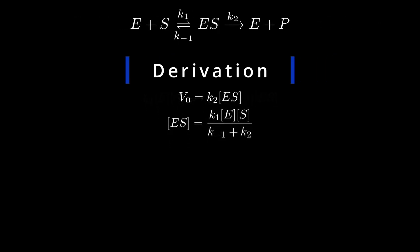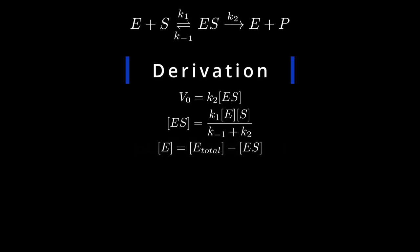However, we encounter another problem. Similar to ES concentration, the concentration of free enzymes cannot be easily obtained from experimental observations. On the other hand, the total concentration of the enzyme, E total, is easier to obtain. Since the total concentration of an enzyme is equal to the concentration of free enzymes and the concentration of occupied enzymes, we can express E concentration with E total concentration and ES concentration.